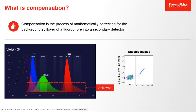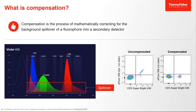What is compensation? Compensation is the process of mathematically correcting for the background spillover of a fluorophore into a secondary detector. Looking at the same markers on a spectral viewer from before, the plot on the right is uncompensated data. But when compensation is applied, the signal is removed from the secondary detector, and only the signal from the primary detector is seen.